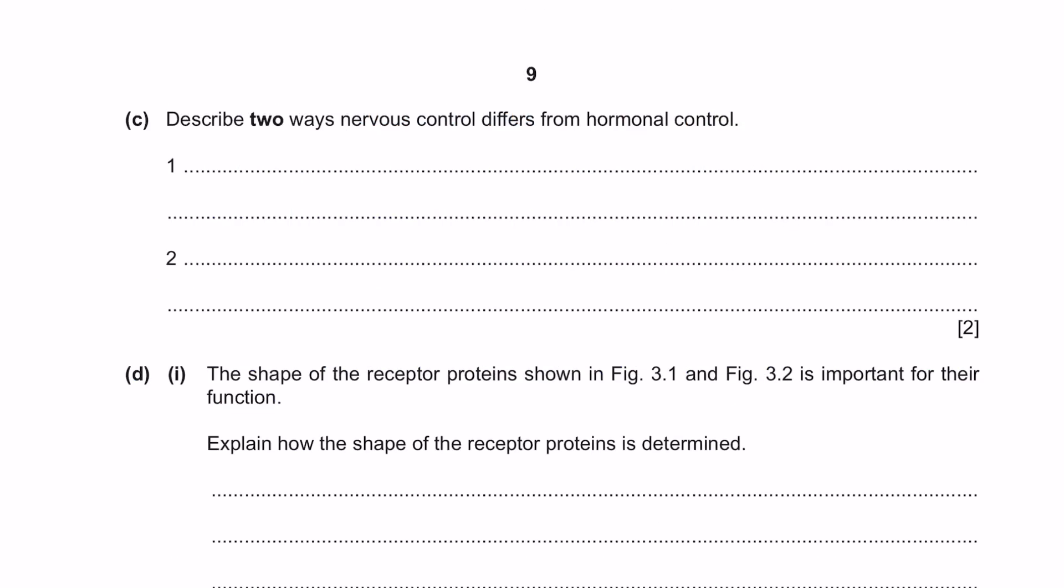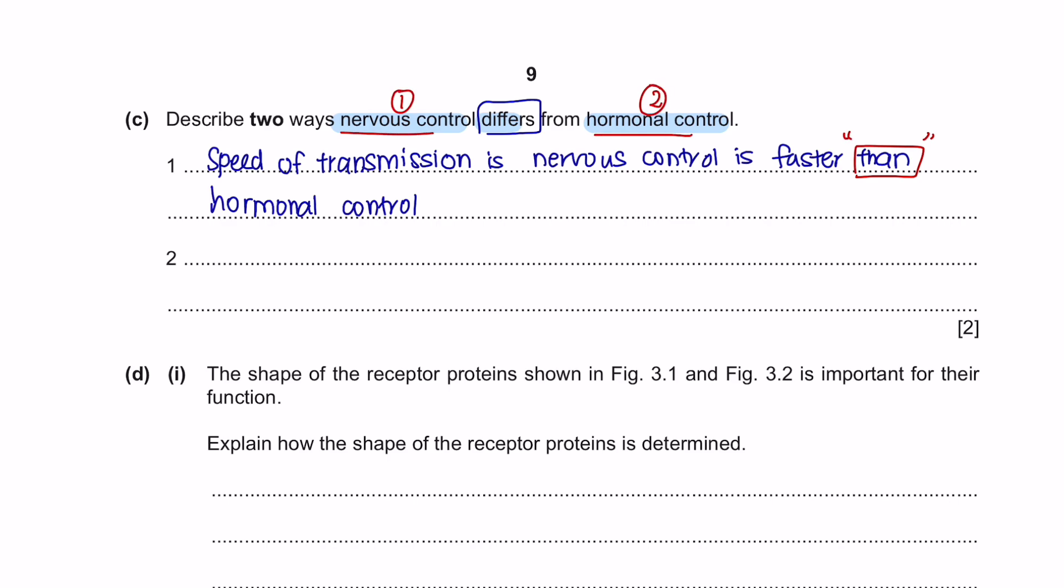Question C. Describe two ways nervous control differs from hormonal control. The speed of transmission for a nervous system is very fast compared to a hormonal system. When asked to state differences, you can use the keyword 'than' to compare whatever that they're asking you in the question. And the second difference is you can speak of the length of effect, where it is short for the nervous control and longer for hormonal control. For an extra point, you could mention the type of message in a nervous control is electrical impulse, whereas in a hormonal, it's a chemical.